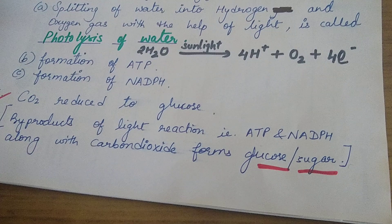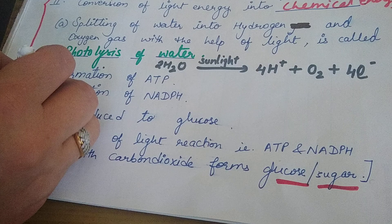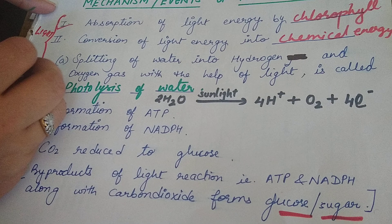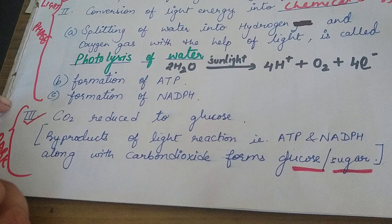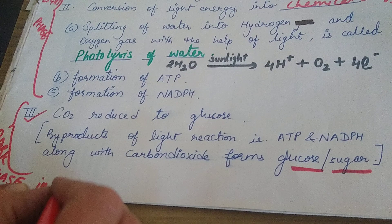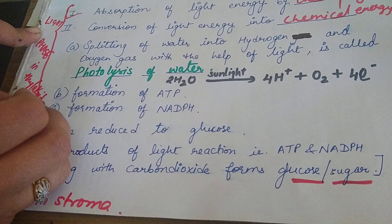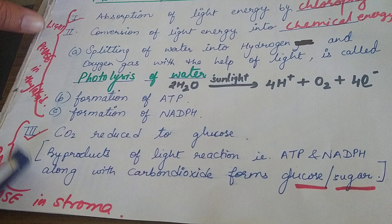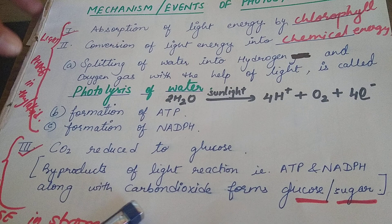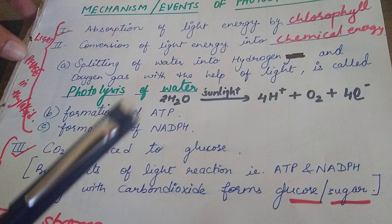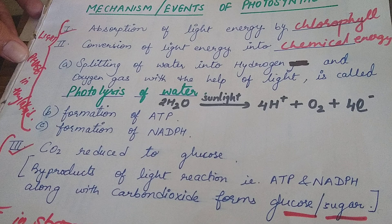To summarize: the first two steps — absorption of light energy by chlorophyll and conversion of light energy into chemical energy — take place inside the thylakoid and are therefore light phase reactions. The third step — CO₂ reduction — takes place in the stroma and is the dark phase reaction. These three steps are the very important mechanism or events of photosynthesis. Carefully note down each point and study it using your NCERT or any other book, and stay updated for the next video.